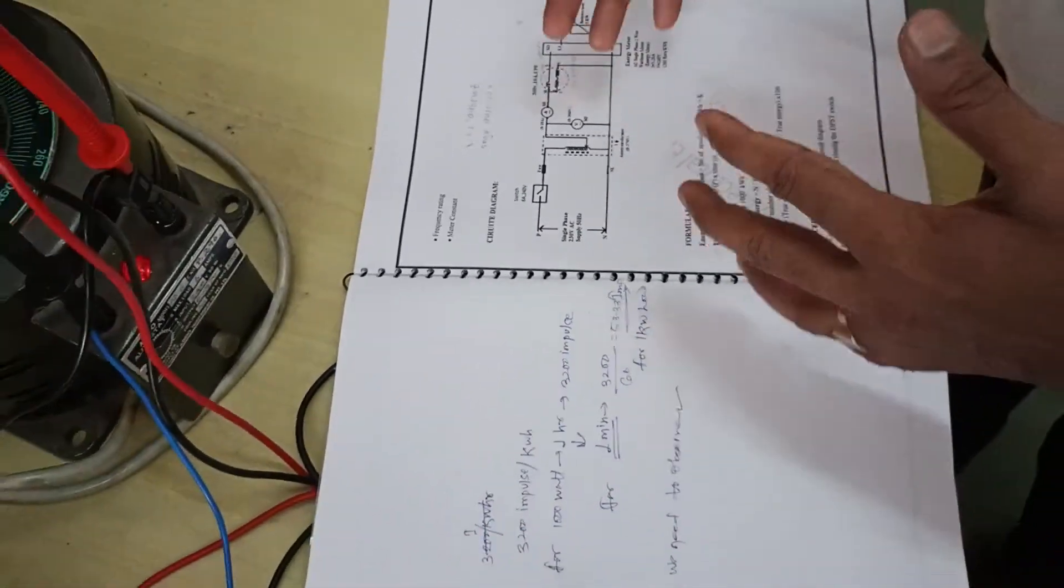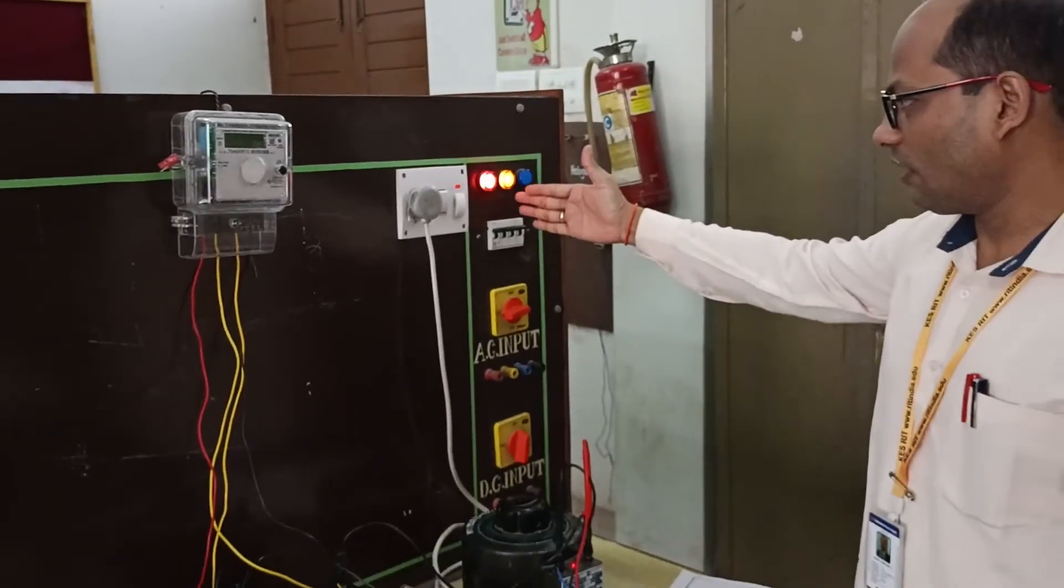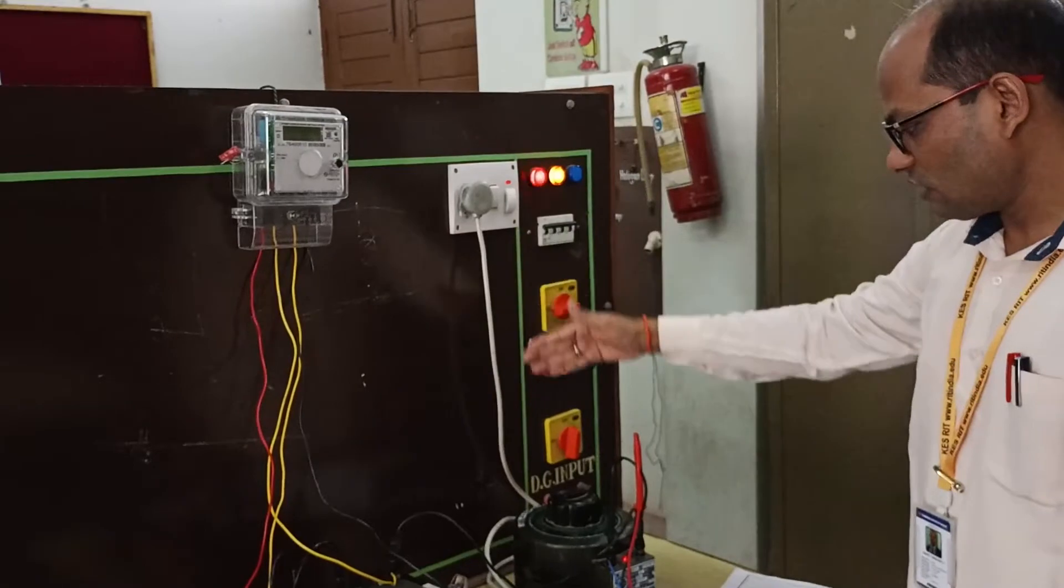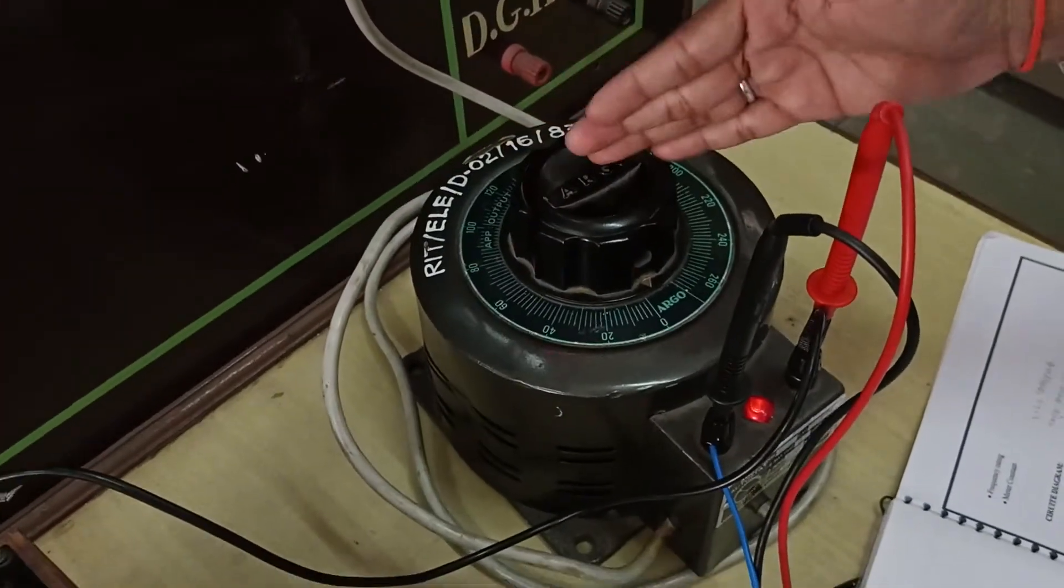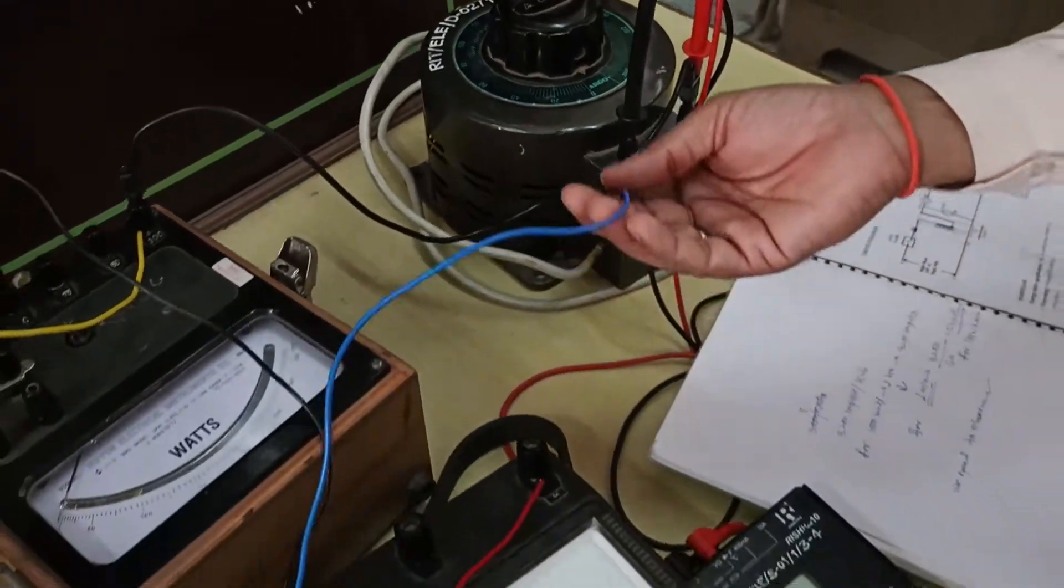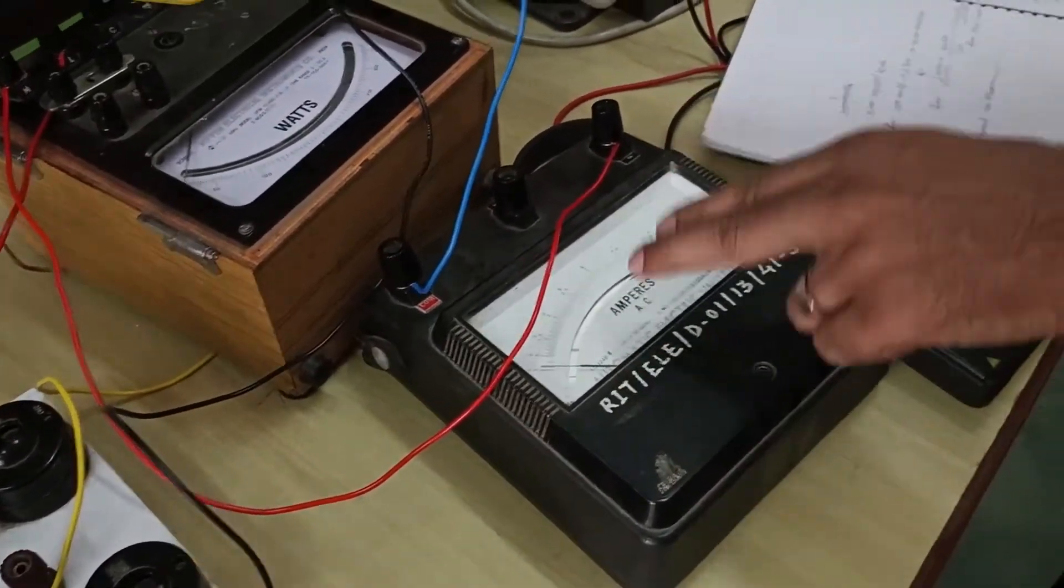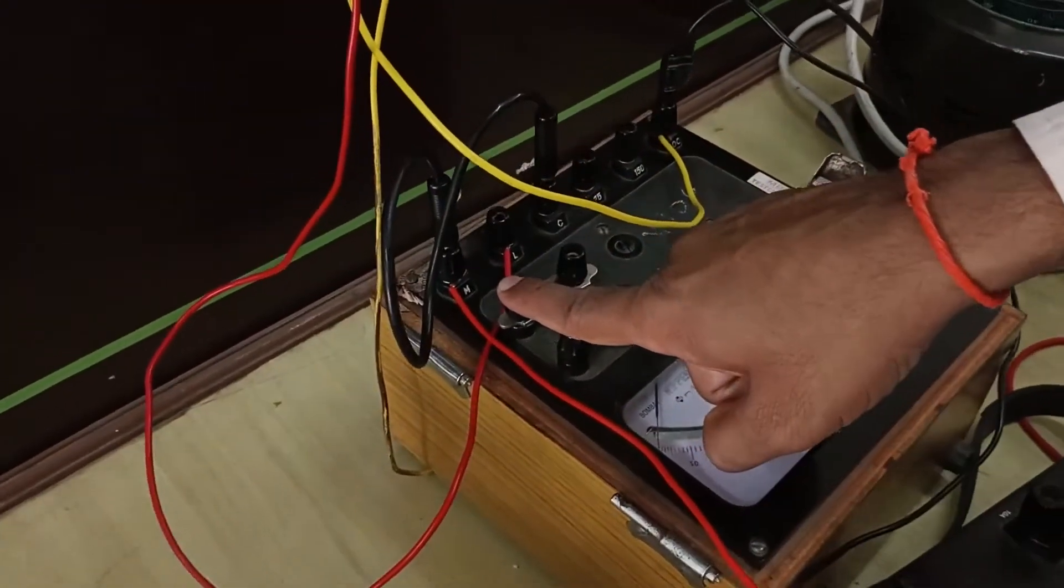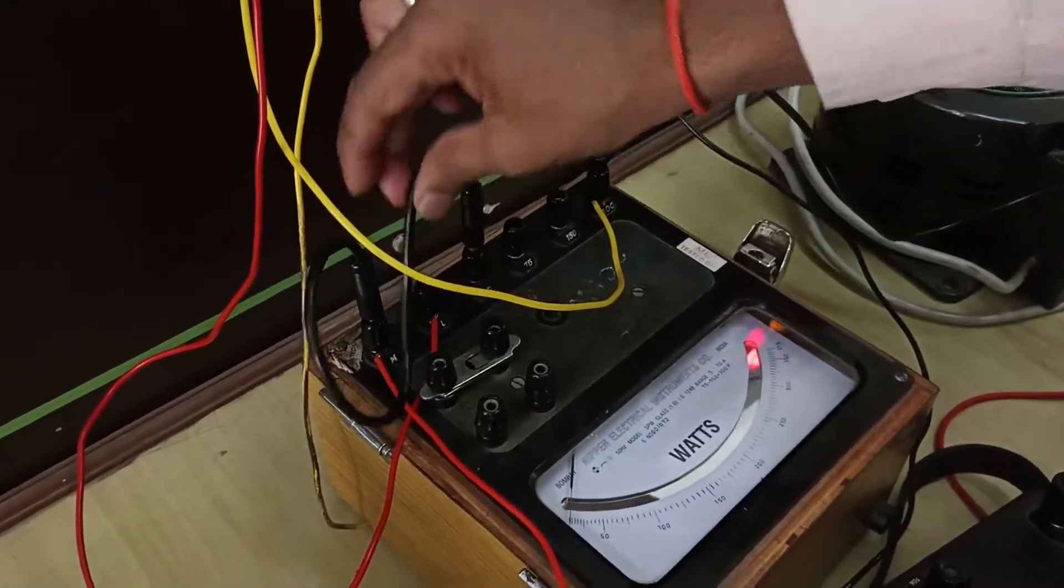Let's have this in practical. Here we have AC supply to our board which is given to our single phase variac. From there we have connected to ammeter which is connected in series. The second point is connected to the M of wattmeter and M and C are shorted.